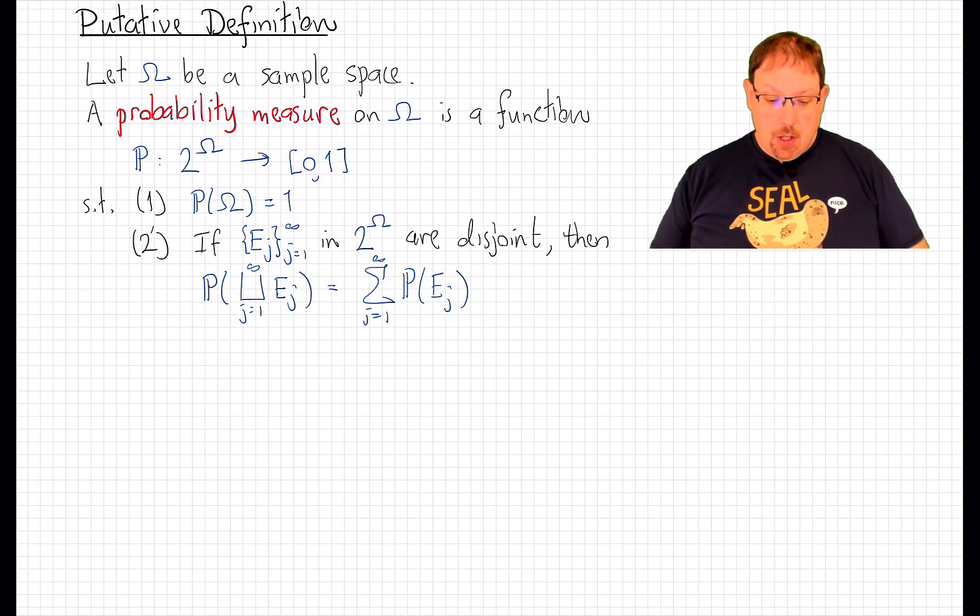or a radius r dartboard. A probability measure on that sample space is a function defined not on the sample space, but on events, on subsets of the sample space. Remember this notation, 2^ω, means the set of all subsets of omega.